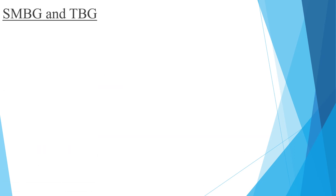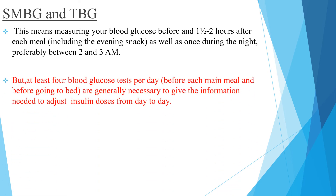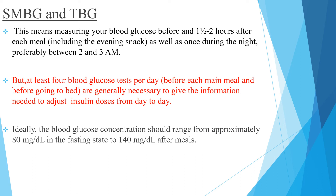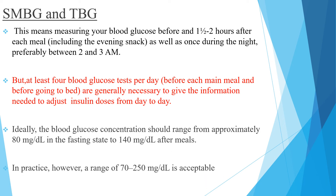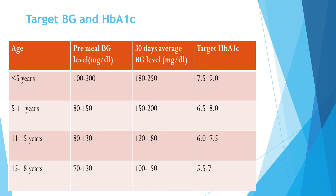For long-term follow-up, self-monitoring of blood glucose is very important — measuring before and 1 to 2 hours after each meal, including the evening snack, and once during the night, preferably between 2 and 3 a.m. At minimum, 4 blood glucose tests per day — before each main meal and before bed — are necessary to adjust insulin doses. Ideally, blood glucose should range from 80 to 140 mg/dL (80 fasting, 140 after meals), but in practice a range of 70 to 250 mg/dL is acceptable. Target blood glucose and HbA1c are based on age as shown in the table.